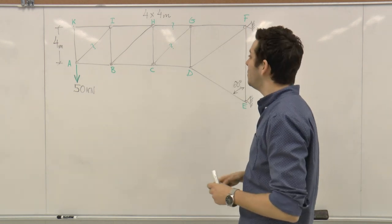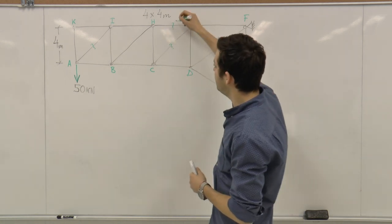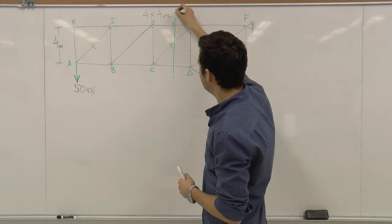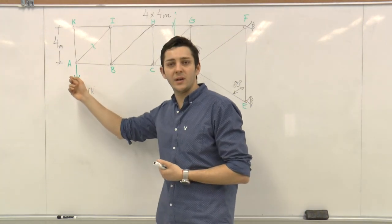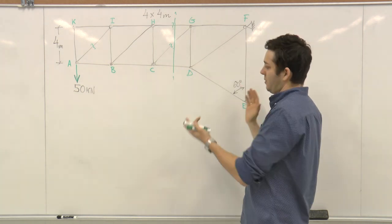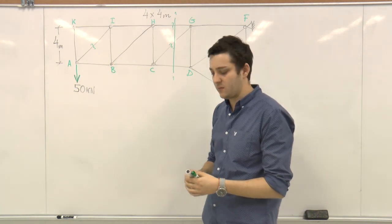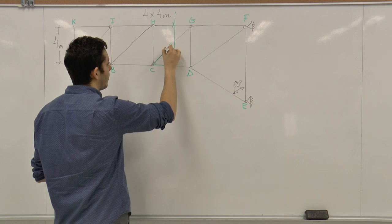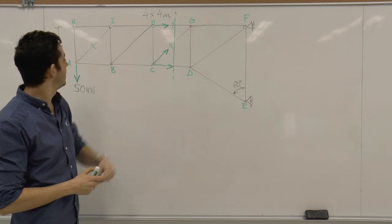It's easy to say that we need to make a section here along these two members and also along the CD. When we're doing this section, we can look on the left part of the structure or on the right part of the structure. All the unknowns are here, therefore we will look on the left side of the structure. Because of the section, we have now three forces: one, two, and three, and we need to find two of them.